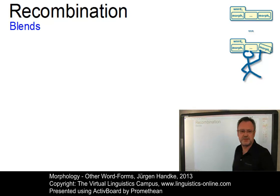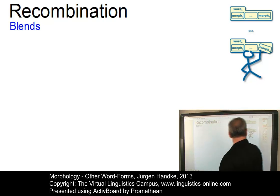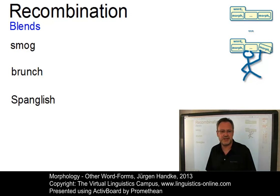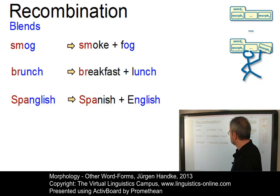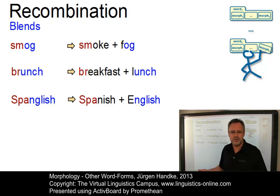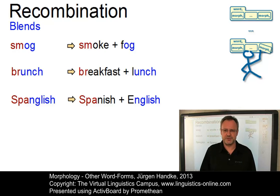Let's start with word forms that are formed by means of an operation that combines chunks belonging to distinct lexemes. Here are three examples: smog, brunch, and Spanglish. These words, which are referred to as blends, are generated by a recombination of the parts of their base forms. Smog is a result of combining 'smoke' and 'fog'. Brunch is a result of combining 'breakfast' and 'lunch'. And Spanglish is a result of combining 'Spanish' and 'English'. The legitimacy of this operation is mainly determined by a set of phonological principles.